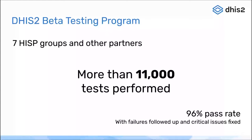We had more than 11,000 tests performed by these beta testing partners, which is quite extensive, and we hope to expand that in future version releases. This testing was done on production databases with upgrades from previous releases, using the context and use cases common in DHIS2 implementations. We're hoping to bring more real-world testing into the process earlier, and we expect a very high quality release in DHIS2 version 40 as a result.